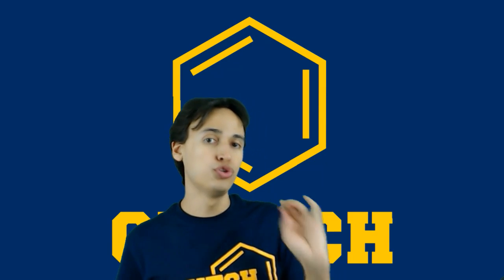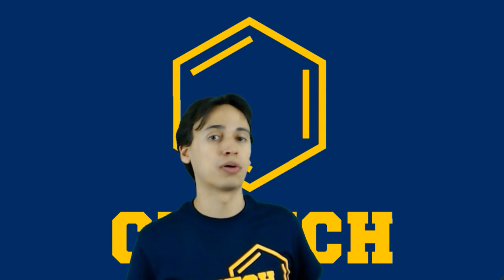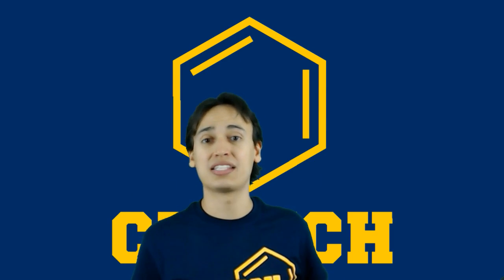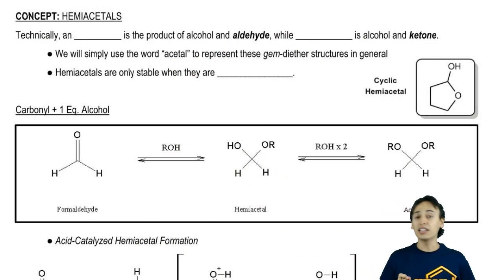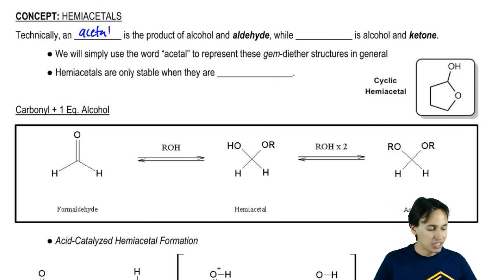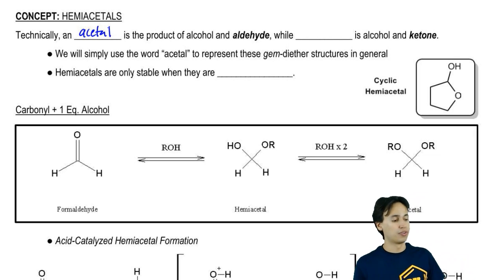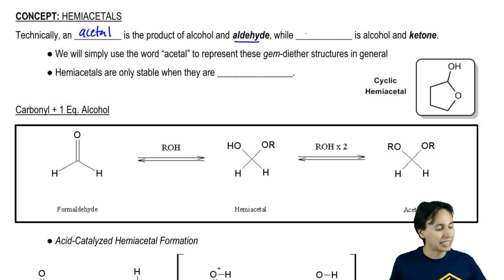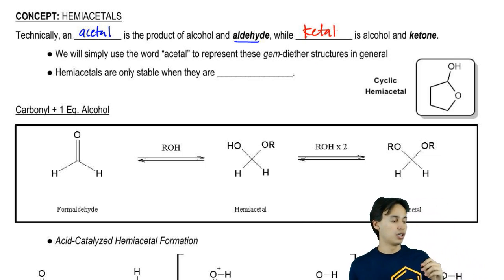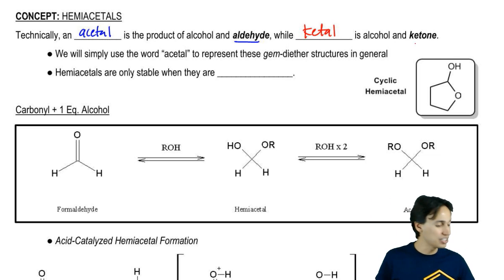In this next section, we're going to discuss one of the products that happens when a neutral alcohol attacks a carbonyl, and that's called hemiacetals. Let's start off with one big disclaimer: technically the word acetal is used to describe the product of an alcohol and an aldehyde, while the word ketal is used to describe an alcohol and a ketone.